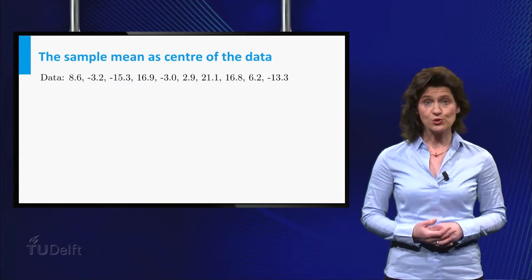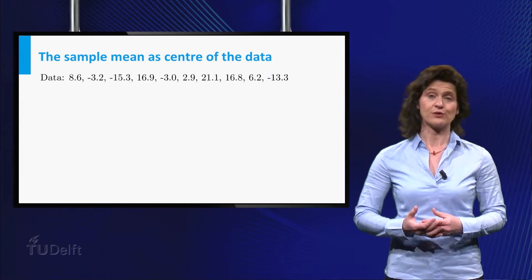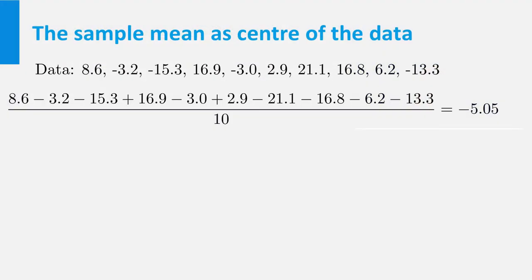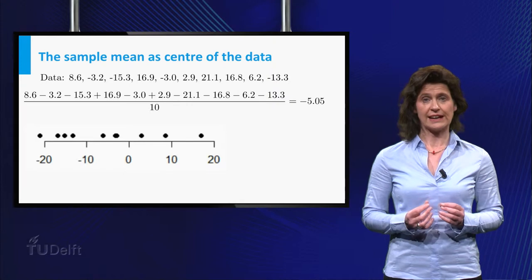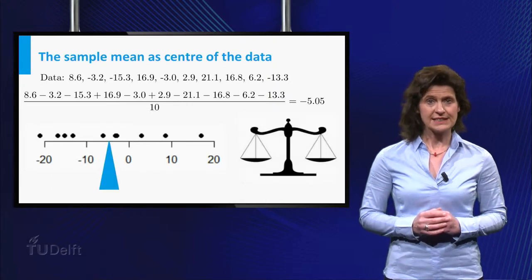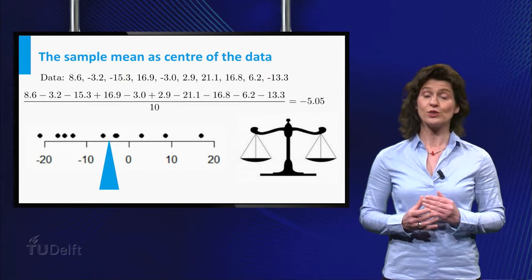The most commonly used method to describe the center of a dataset is the mean or average of the numbers. For the dataset given here, the mean is minus 5. This mean value has an interpretation in terms of balance. If you think of the points on the line as little equal masses, the mean of the data can be seen as the location on the line where the line should be supported to achieve balance.